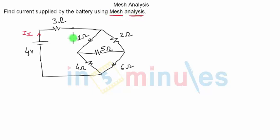Whenever that is the question, we will identify the meshes, define the mesh currents, and apply KVL equations in each and every mesh. So you can see that in this very simple circuit, there are basically three meshes. This is mesh number one, this is mesh number two, and this is mesh number three.